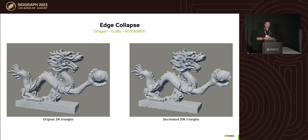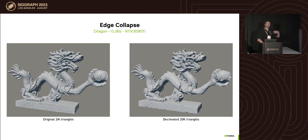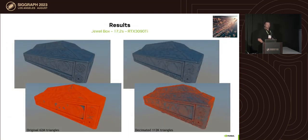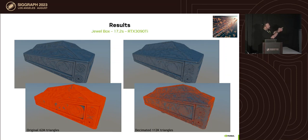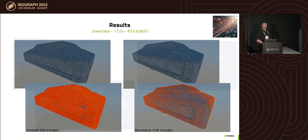For example, on the RTX 3090, in one third of a second, two million triangles can be collapsed to 20k triangles and you can see it happening and interact with parameters. Another example with 62 million triangles and aggressive remeshing down to about 100k triangles takes around 17 seconds — still quite acceptable.